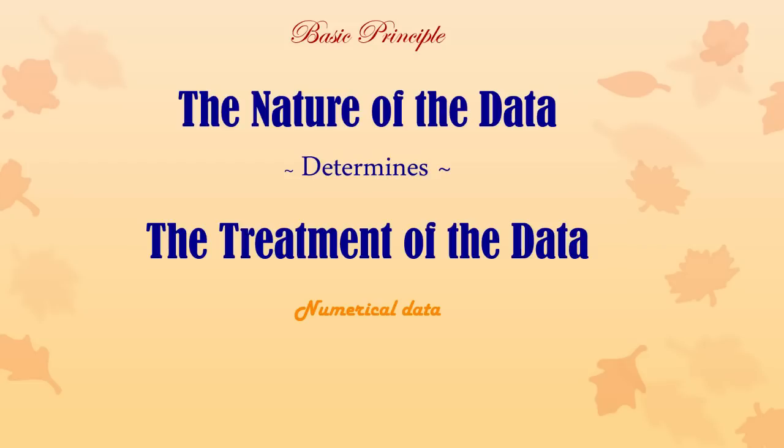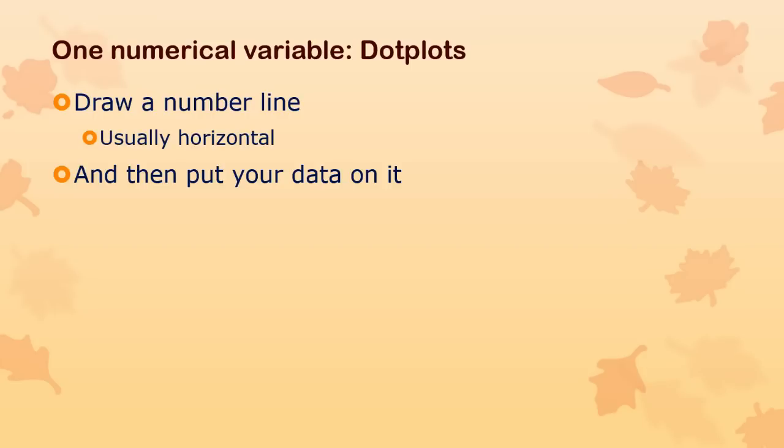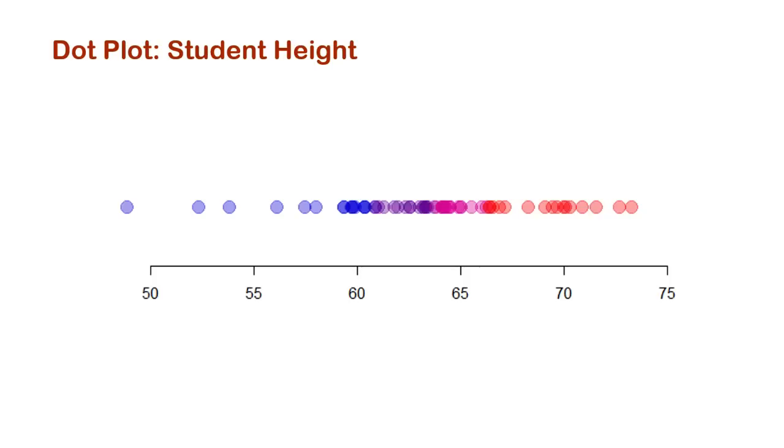This might look familiar to some of you. So, one numerical variable. Dot plots are about as easy as it gets. You draw a number line, horizontally or vertically, whatever. Usually it's horizontal, and then you put your data on it in dots. Every observation is one dot. You just put it on there. And you can get fancy if you want. You can use colors if the dots are overlapping.